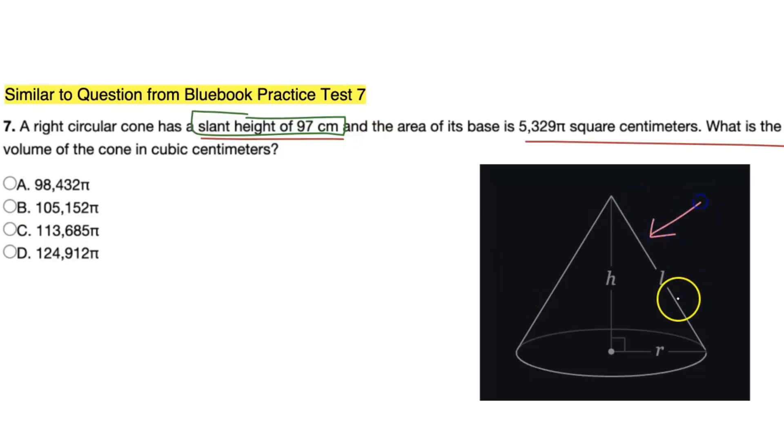So what is the first plan of action? We're given a couple things. We're given the slant height, so you might be wondering what is the slant height? Well, I have a nice diagram here. So this right here, this L labeled is the slant height. Your actual height is this, h. But your slant height is referring to this value out here.